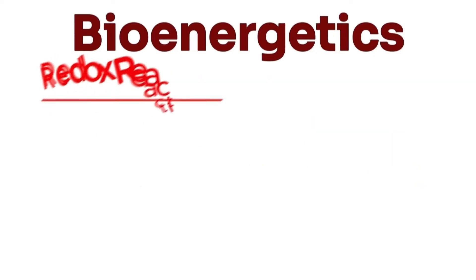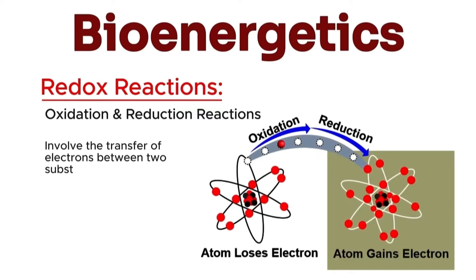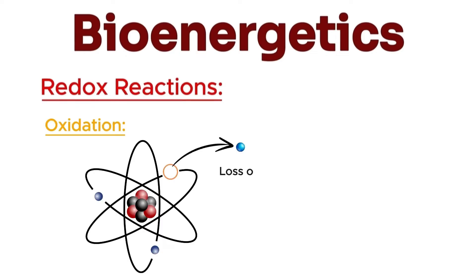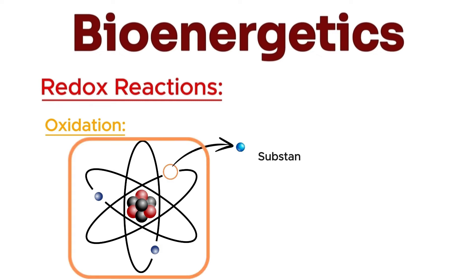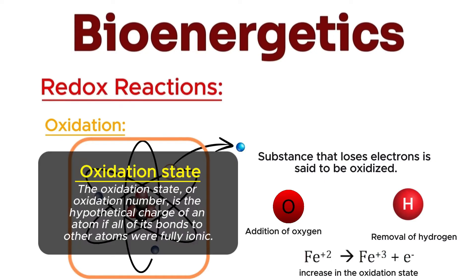Another major concept is redox reactions. Oxidation and reduction reactions involve the transfer of electrons between two substances. These reactions are fundamental to many biological and chemical processes. Oxidation is the loss of electrons by a molecule, atom, or ion. The substance that loses electrons is said to be oxidized. This often involves the addition of oxygen or the removal of hydrogen and results in an increase in the oxidation state of the substance.